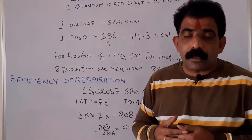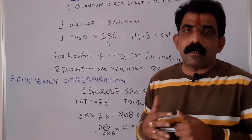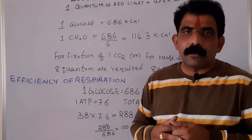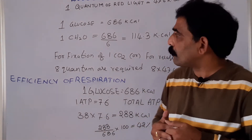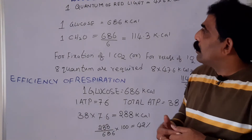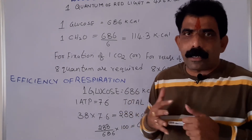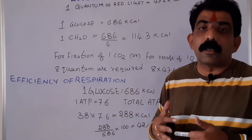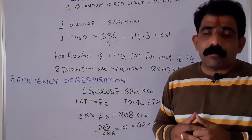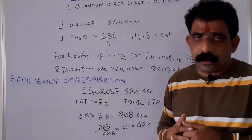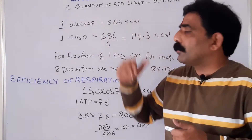That radiant energy is absorbed by the plants and they convert it into chemical energy, preserved in the form of potential energy in chemicals like glucose. Radiant energy comes in the form of light packets — energy packets known as photons, or quanta (singular: quantum). To calculate the efficiency of photosynthesis, we should know some values, like how much energy is present in one quantum.